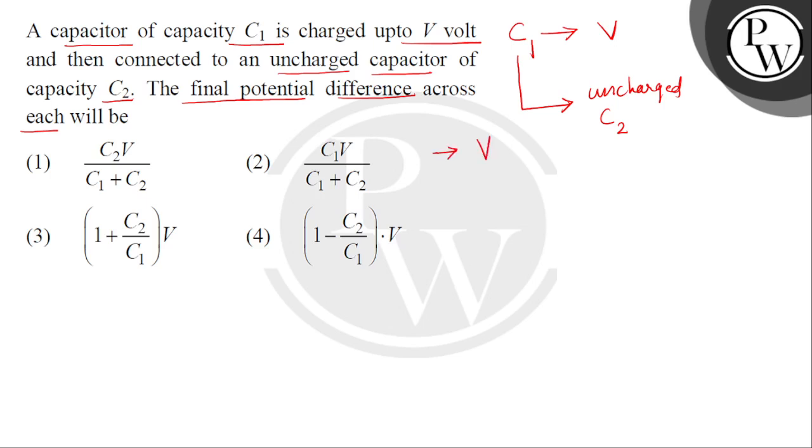Let the final potential difference across each capacitor be VF. If we talk about the first capacitor, it was charged by C1 multiplied by V. Let this be equation number 1.